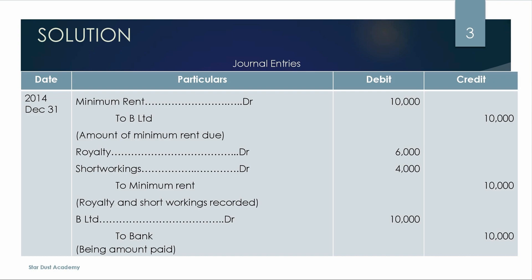Using the Minimum Rent account method, the entries are: first, Minimum Rent to Lessor. Then we separate: Royalty account and Short Working account to Minimum Rent account. Then Lessor to Bank for payment. The fourth entry transfers royalty to the Production account. Short Working account is transferred to the Profit and Loss account.